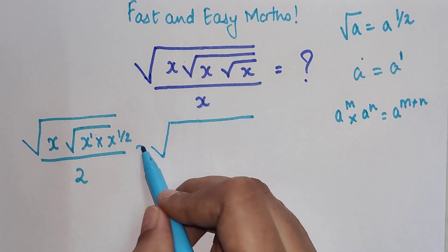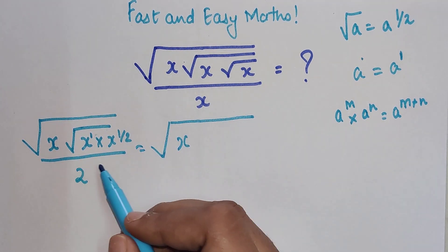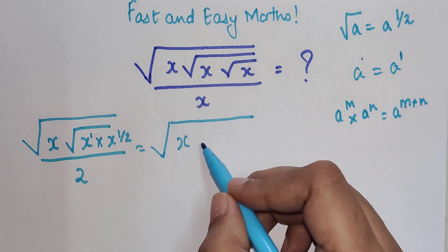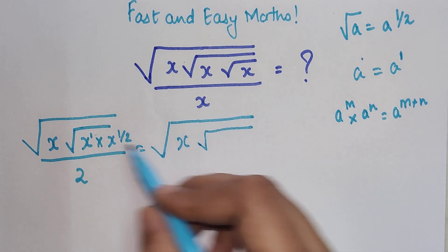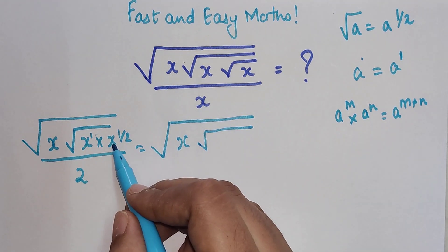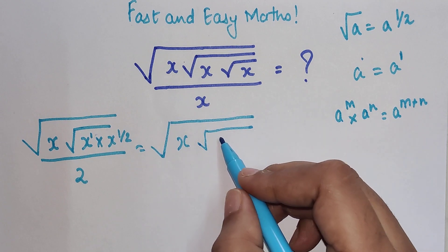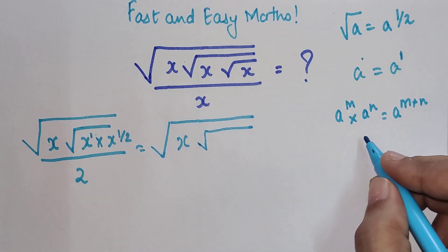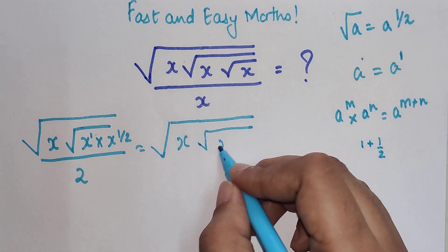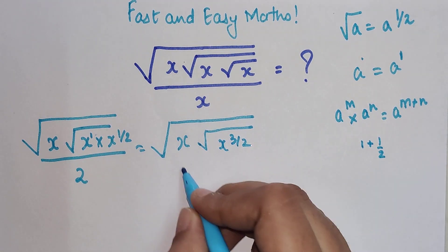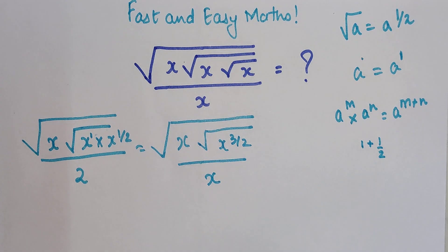So here I can just add 1 and 1 by 2. This now becomes, this root x will be written as it is, and then this x raised to 1 into x raised to half will now be written as x raised to 1 plus 1 by 2. That is nothing but x raised to 3 by 2 divided by x.